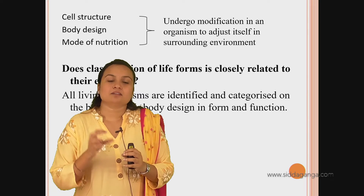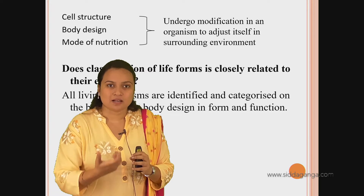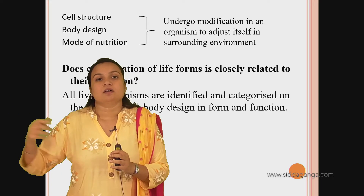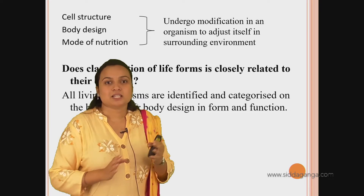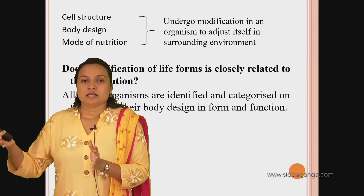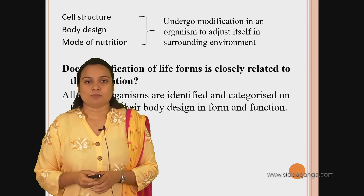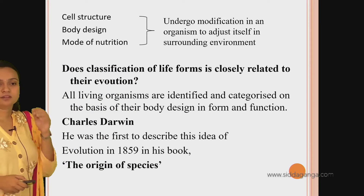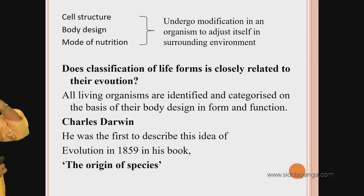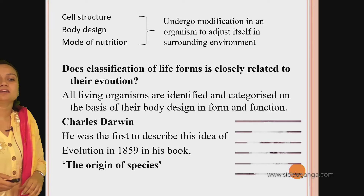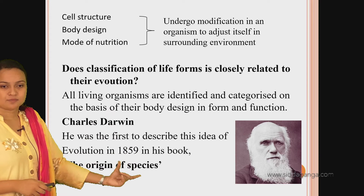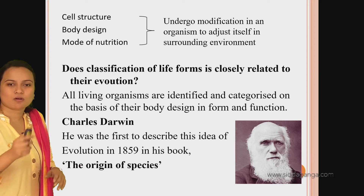The characters which come initially are more basic compared to the organisms which arrive later. The initial characters are the fundamental characters of an organism. Based on the fundamental characters, further different characters will be formed during evolution. Charles Darwin was the first to describe the idea of evolution in 1859 in his book, 'The Origin of Species'.